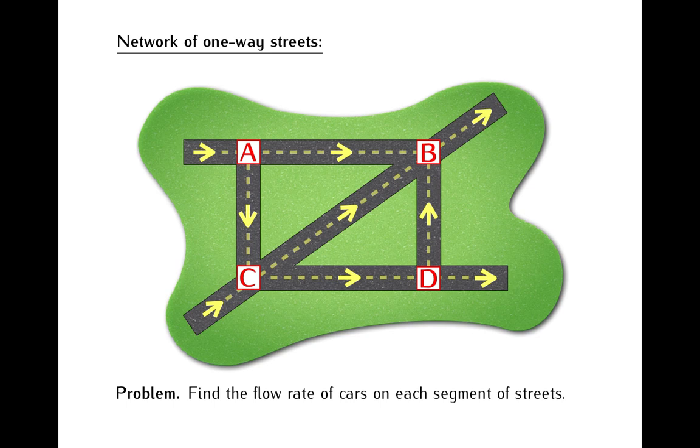Let's assume then that we placed vehicle counters on a few streets and that they recorded the following data. On average, there are 85 cars per hour traveling on the street leading to the intersection A, there are 70 cars per hour on the street joining intersections C and D, 45 cars per hour on the street joining intersections D and B, and that there are 120 cars per hour on the street exiting from the intersection B.